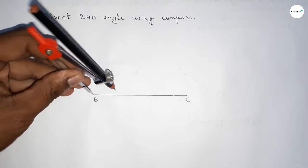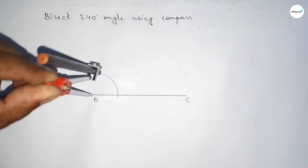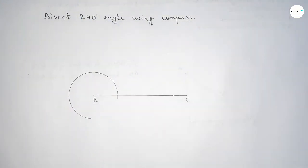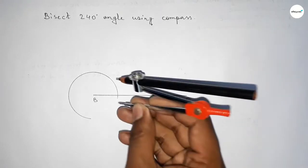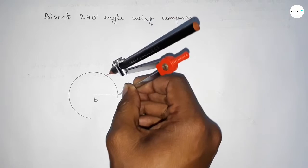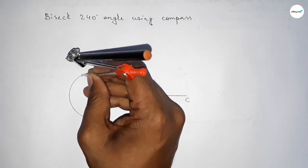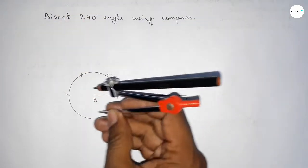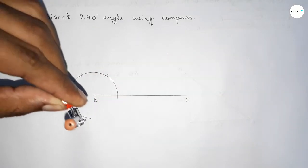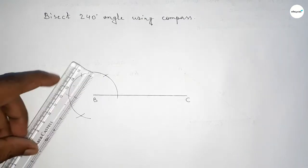Putting the compass on point B and taking any length, we draw an arc. With the same length, we cut here, then put the compass here and cut again, then put the compass here and cut again, and finally put the compass here and cut here. Both curves intersect at a point.